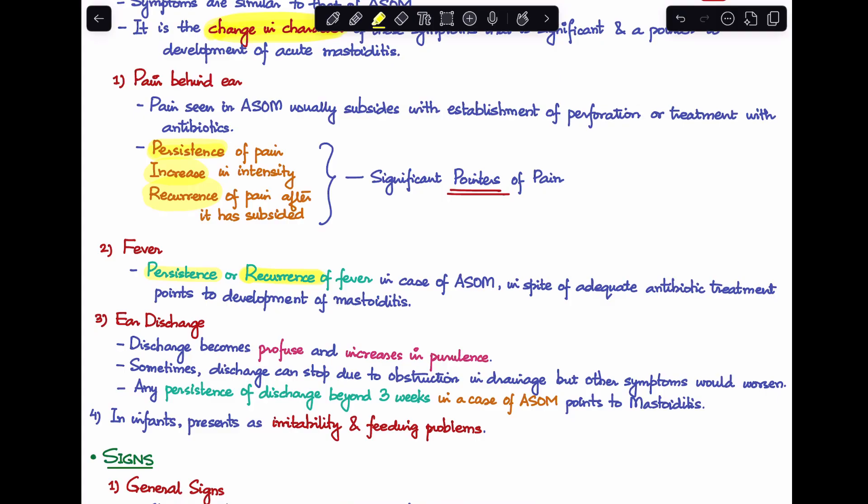Third feature is ear discharge. Discharge is present in acute otitis media, but when it becomes profuse and increases in purulence, we suspect acute mastoiditis. Sometimes discharge can stop due to obstruction in drainage, but all other symptoms worsen. Any persistence of discharge beyond three weeks in acute otitis media will point towards development of mastoiditis.